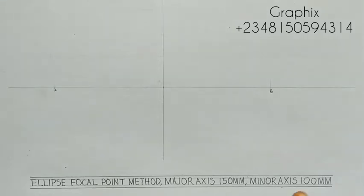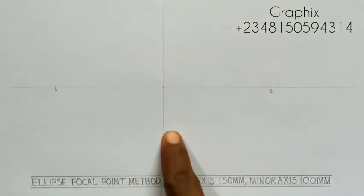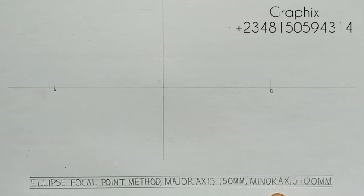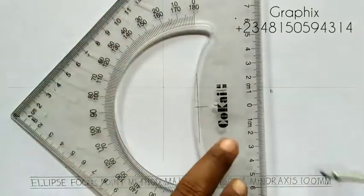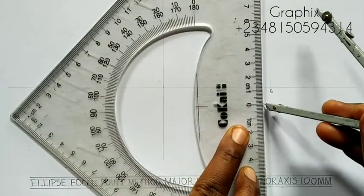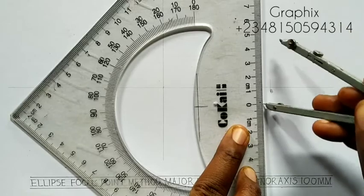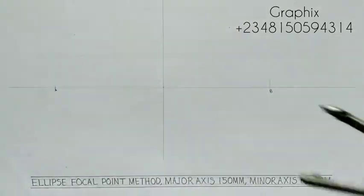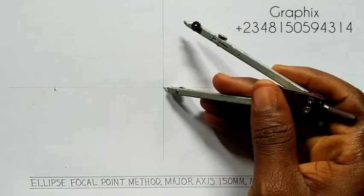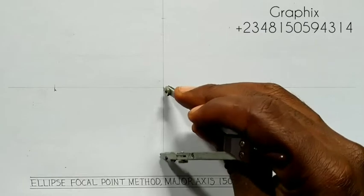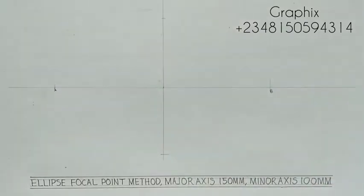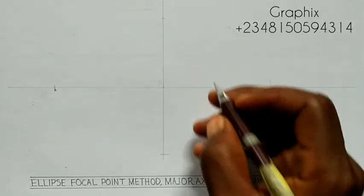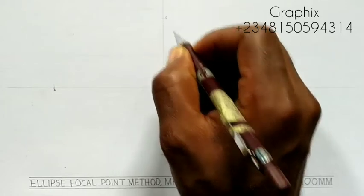The next thing is to get the minor axis, which is always on the vertical line. The minor axis is given as 100, so take half of it, which is 50. Measure from 0 to 50, place it at the center, mark up and mark down. This point is given as point C and this point as point D.